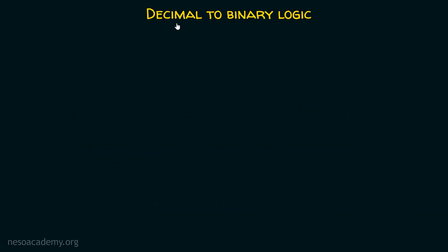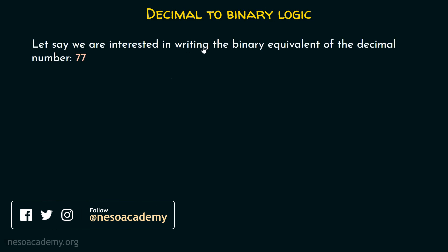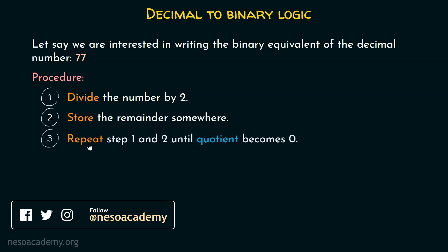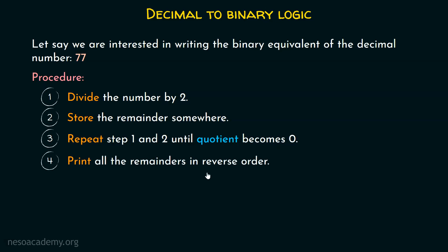First, we have to understand the decimal to binary logic — how to convert a decimal number to a binary number. It's very simple. Let's say we are interested in writing the binary equivalent of the decimal number 77. For this purpose, we have a simple procedure: divide the number by 2, store the remainder somewhere, repeat steps 1 and 2 until quotient becomes 0, then print all the remainders in reverse order.